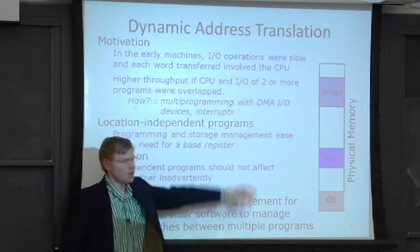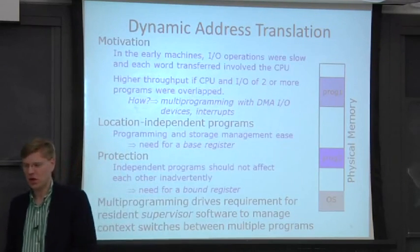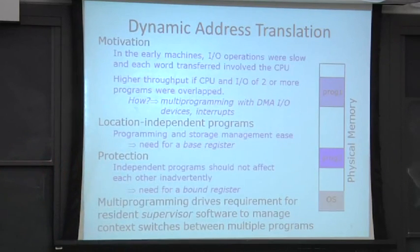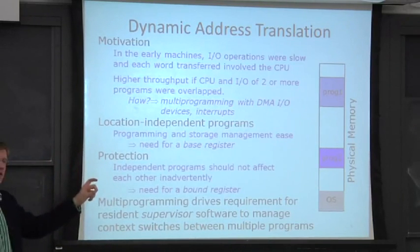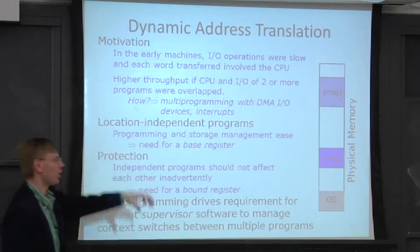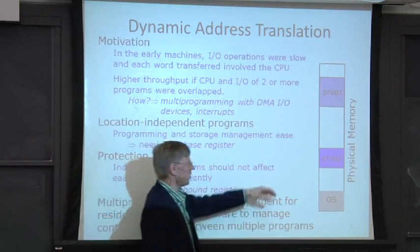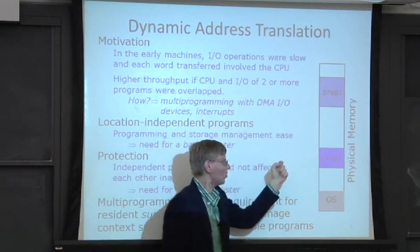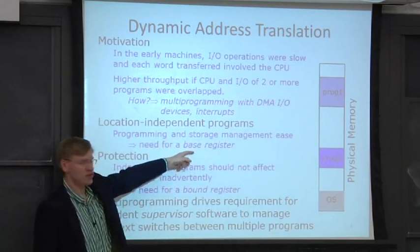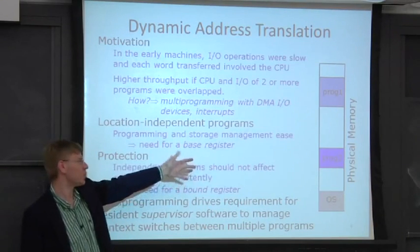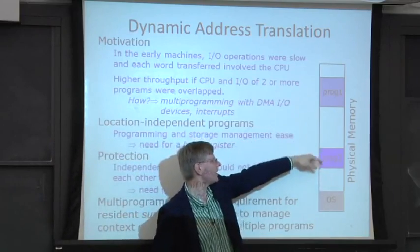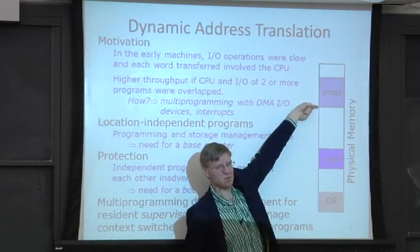So one thing you can start to think about is actually have some notion of relocation. And you may not do this on a chunk-by-chunk basis, but instead you do it on a program-by-program basis. So what you can do is you can have a base register, so that all addresses that come out of, let's say, program one get added a certain offset to it.